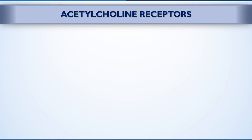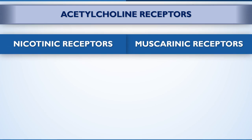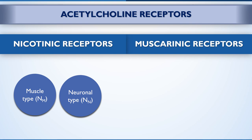Let's see cholinergic receptors. These are subdivided into nicotinic and muscarinic receptors. These names are given after the alkaloids nicotine and muscarine, used for their identification. The nicotinic receptor subtypes are classified as muscle type (N-M) and neuronal type (N-N).